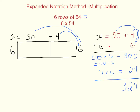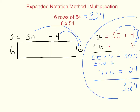Six rows of 54 gives us 324. Now that you've got an idea of how we set up our place value section — area model kind of a thing — and then our expanded notation over here on the right, let's try it together with a different one.